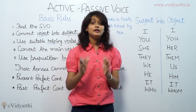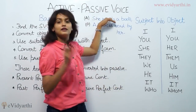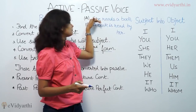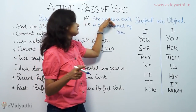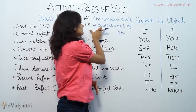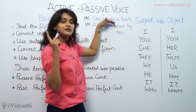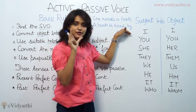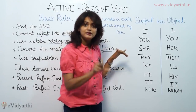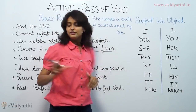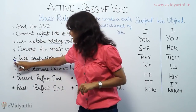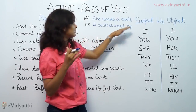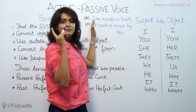The third form of the main verb is required in passive voice. What was the main verb? 'Reads' — that is the first form. The third form is 'read.' So 'reads' becomes 'read' in the passive. That covers three things clearly. The fourth step: use the preposition 'by.'